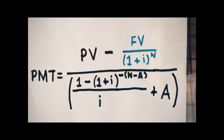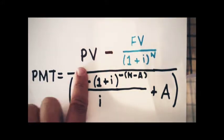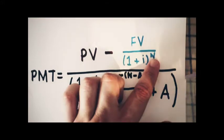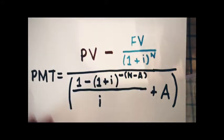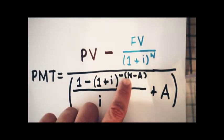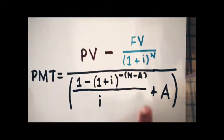Here is the formula to find the payment for leases that require advanced lease payments. On the numerator, you've got the present value of the lease minus the residual value, or the future value over 1 plus i to the power of n. The denominator is 1 minus the quantity of 1 plus i to the power of negative the quantity n minus a, all over i, plus a.